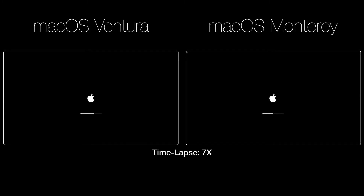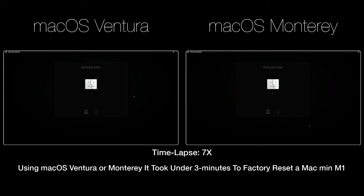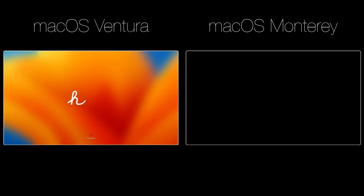As mentioned earlier, running Erase Assistant on either macOS Ventura or Monterey is the fastest way to erase all content and settings on your Apple Silicon Mac. Using a Mac Mini M1, it took just under 3 minutes for the Hello screen to be displayed.